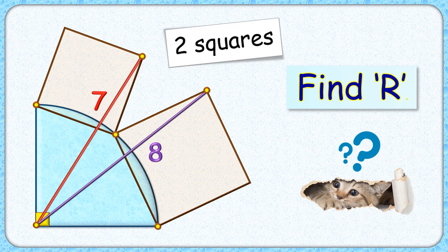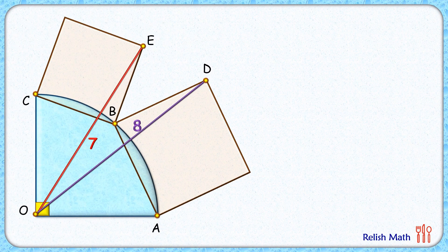The exciting part is that with this limited data we have to find the radius of this quadrant. My solution is somewhat clumsy and lengthy, and I am looking for a much better approach in the comment section. Let's check my approach first. We'll assume the radius of this quadrant is r centimeters.